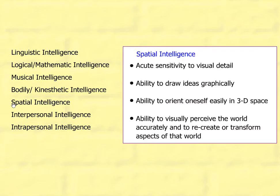Spatial intelligence involves acute sensitivity to visual detail, the ability to draw ideas graphically, the ability to orient oneself easily in 3D space, and the ability to visually perceive the world accurately and to recreate or transform aspects of that world.